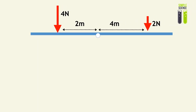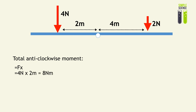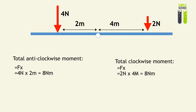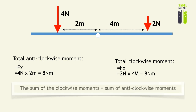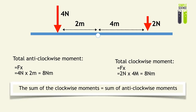Similarly, if you were to fit it on a seesaw-like beam where the center of mass is right through the center and you place the pivot right on it, the total anti-clockwise moment is f times x, which is 4 newtons times 2 meters, giving 8 newton meters. And the total clockwise moment, caused by the 2 newton force on the right, is 2 newtons times 4 meters, which also gives 8 newton meters. So the sum of the clockwise moments equals the sum of the anti-clockwise moments, and the object has attained rotational equilibrium.